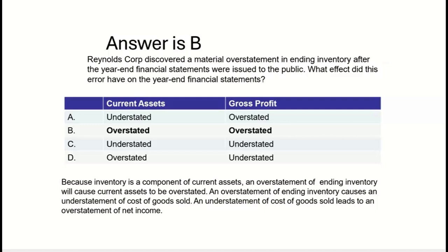We always try to anticipate the next question — that's the I-75 difference. What if the next question asked: what's the impact on working capital as a result of this overstatement in ending inventory? Working capital is current assets minus current liabilities. If current assets are overstated, then working capital is overstated as well. There's a direct relationship between current assets and working capital, so if ending inventory is overstated, working capital is also overstated.